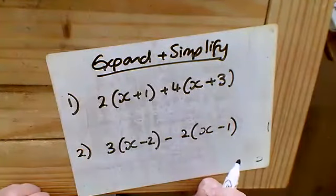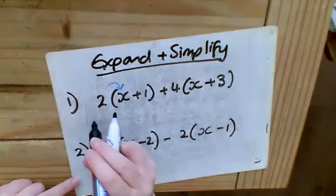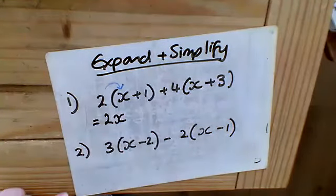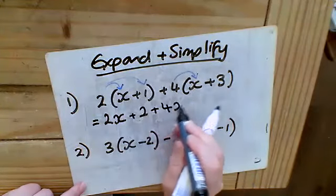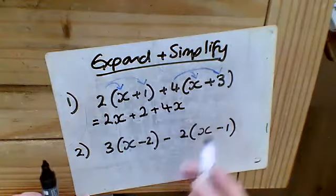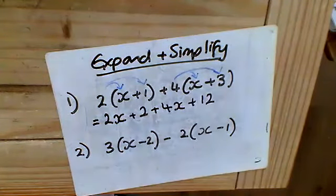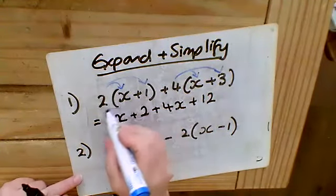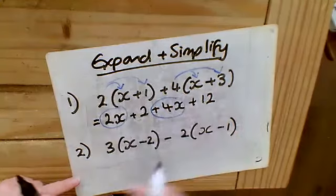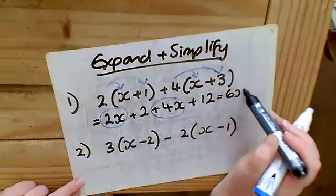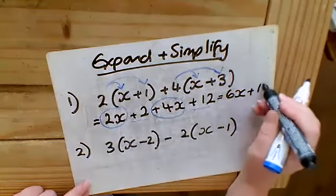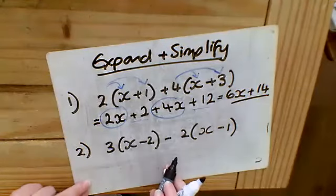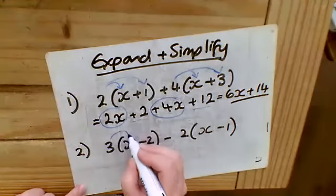I'd recommend you expand each bracket and then simplify at the end. 2 times 1 gives me 2, then plus 4 times x gives 4x, then plus 4 times 3 which is 12. Now I can gather like terms: 2x plus 4x simplifies to 6x, and then 2 plus 12 is 14. So the simplified answer is 6x plus 14.